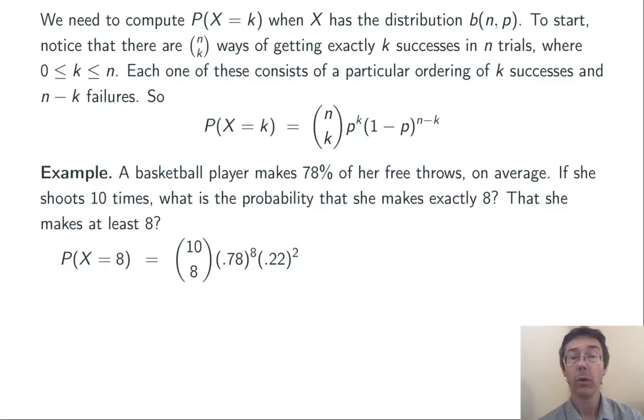So plugging into our formula, when we're looking for the probability that X equals 8, we're doing n equals 10 and k equals 8, p equals 0.78. So we're getting 10 choose 8 times 0.78 to the 8th times 0.22 squared. Simplifying that, we get 0.298.